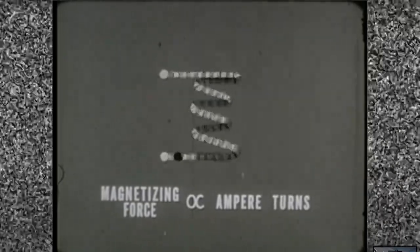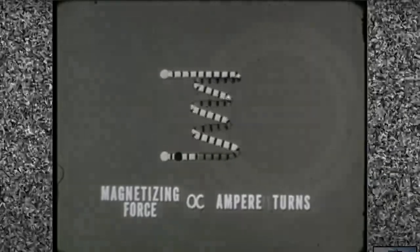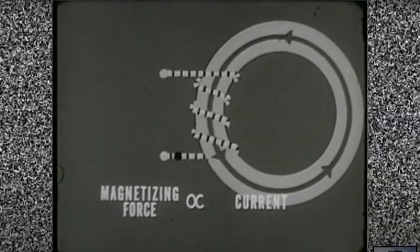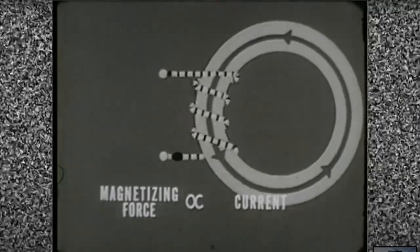Since the number of turns in this winding is constant, we can simplify the rule here. The magnetizing force exerted by the winding on the core is proportional to the winding's current.